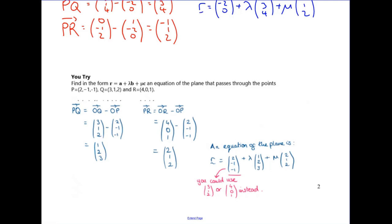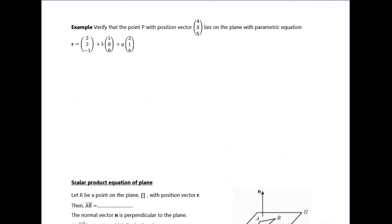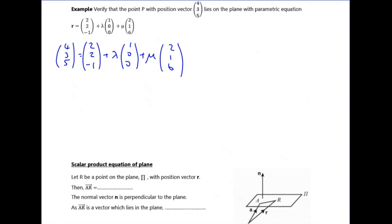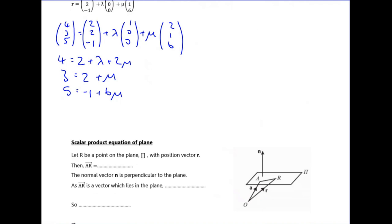This part says: verify that the point with position vector (4,3,5) lies on the plane with this parametric equation. I replace r with (4,3,5) and try to find consistent values of lambda and mu. Reading the components: the top equation gives 4 = 2 + lambda + 2mu, the second gives 3 = 2 + mu, and the third gives 5 = −1 + something. This example has a lot of zeros in the middle vector.